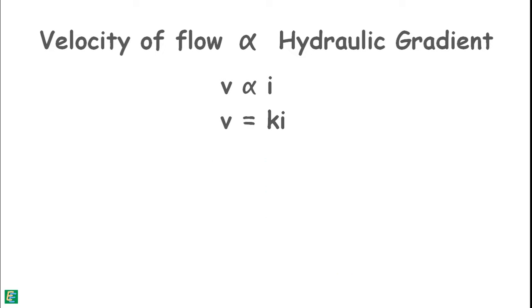We can write coefficient of permeability as K = v / i. Here if the hydraulic gradient is unity, that is 1, the coefficient of permeability will be equal to the velocity of flow. In other words, the coefficient of permeability is the velocity of flow of liquid inside the soil if the hydraulic gradient is unity.